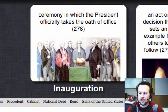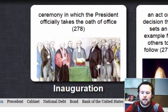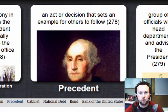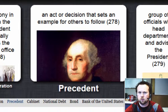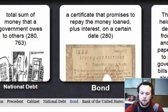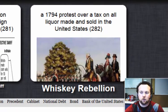Some of our key terms for today — and some things we will talk about in the future as well — but it's good to have a definition. Inauguration: the ceremony in which a president officially takes the oath of office. Precedent — not to be confused with president — is an act or decision that sets an example for others to follow. So as the first president, Washington had to set a precedent for the president. Also: Cabinet, National Debt, Bond, Bank of the United States, Tariff, and Whiskey Rebellion.